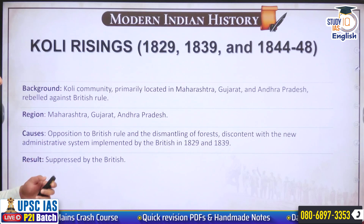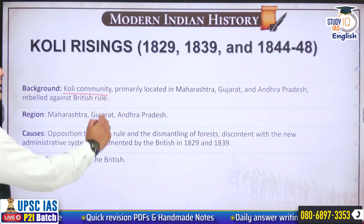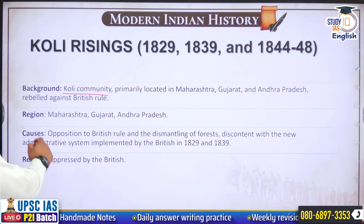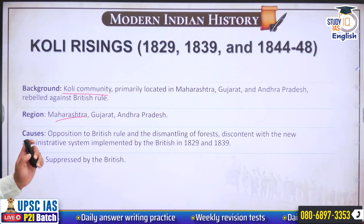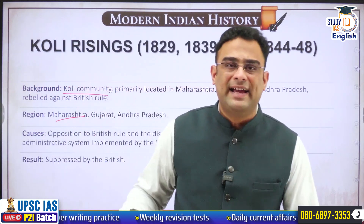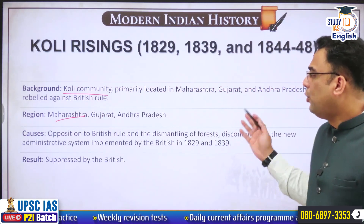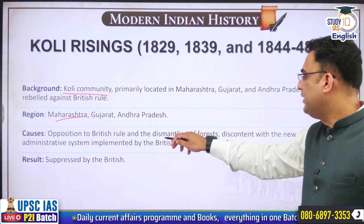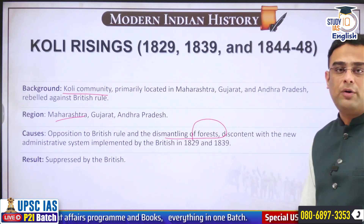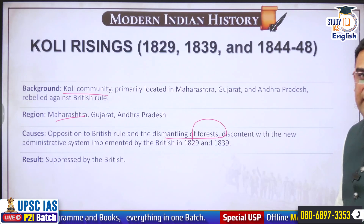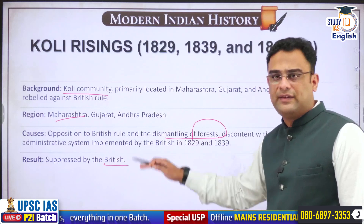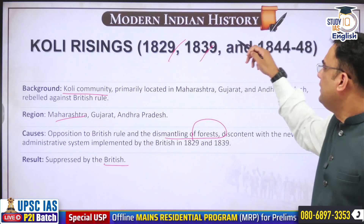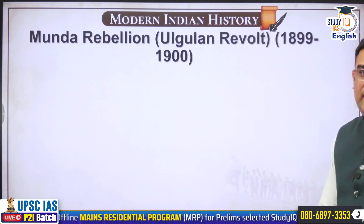Then comes the Koli uprising. The Koli community is located in Maharashtra, parts of Gujarat and also some in Andhra Pradesh. They rebelled against the Britishers for basically the same reasons — the changes the Britishers brought about and the annexations that altered the traditional way of life. The Britishers had also dismantled the forests of this area during their operations, affecting livelihoods. The uprisings occurred in 1829, 1839 and 1844 to 1848. Ultimately the Britishers suppressed these insurrections.